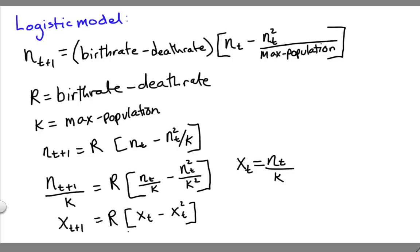This equation represents the fraction the current population is of the carrying capacity at a given time, and that's equal to r times the fraction at the previous time step minus that same fraction squared. And this is known as the logistic map.